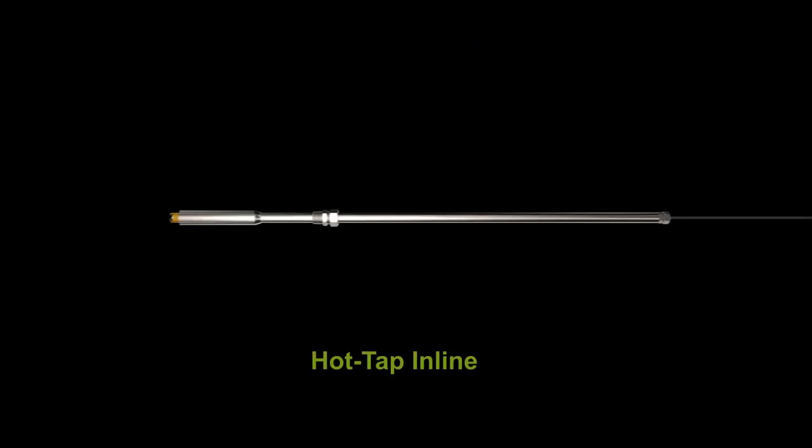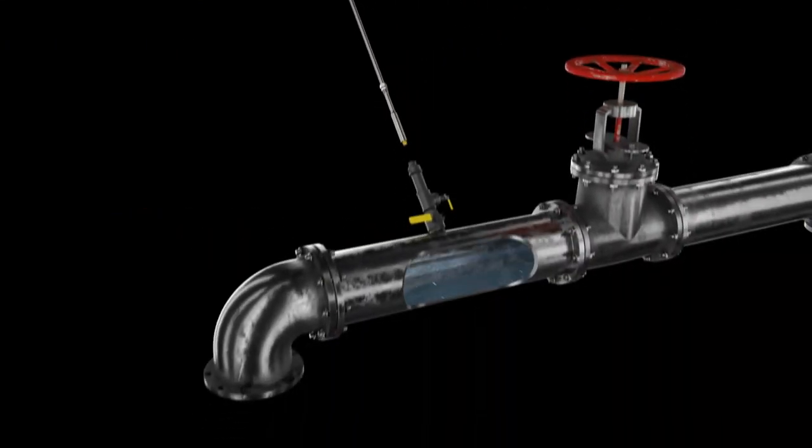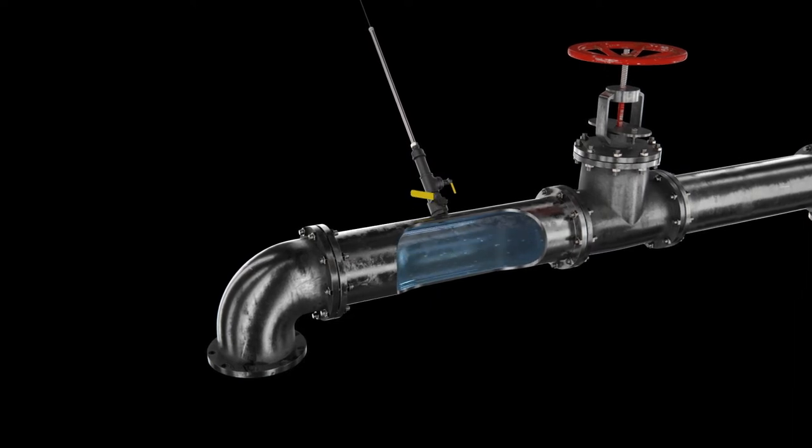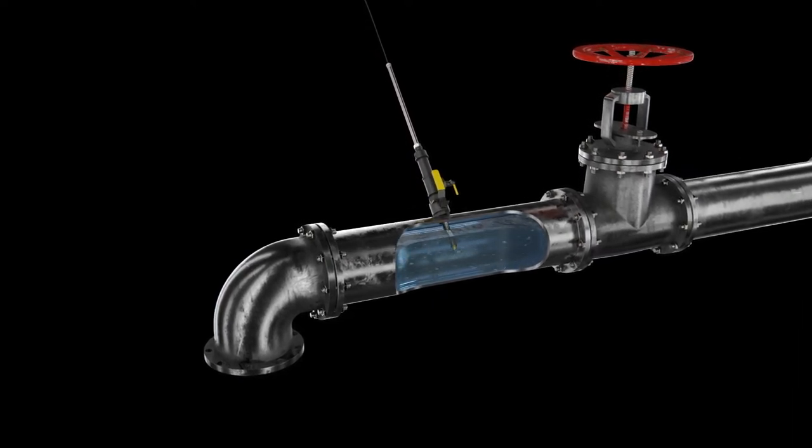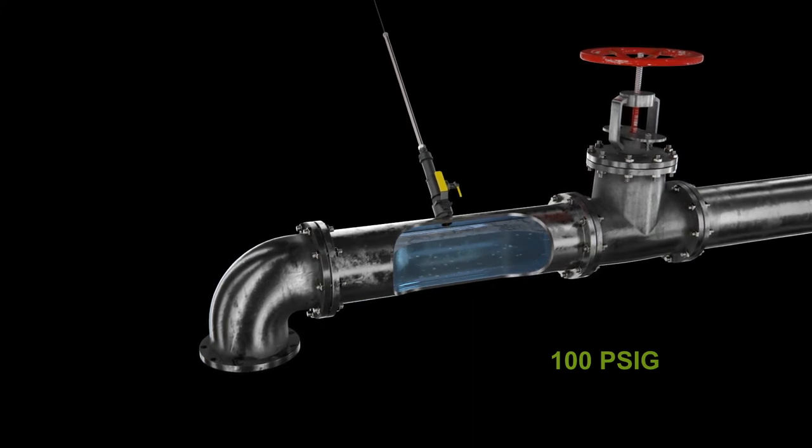The Turtle Tough hot tap assembly allows fast and easy insertion and removal of sensors directly into process tanks or pipes at pressures up to 100 PSI-G.